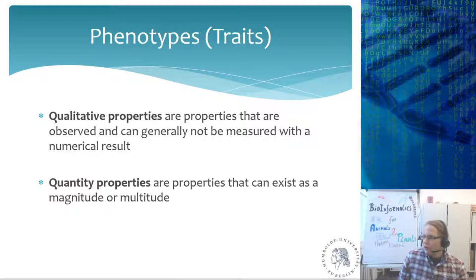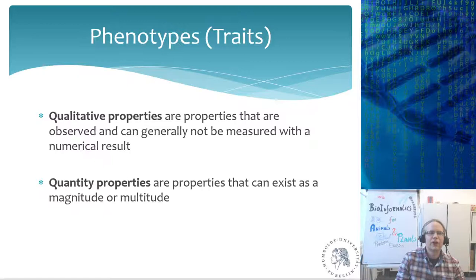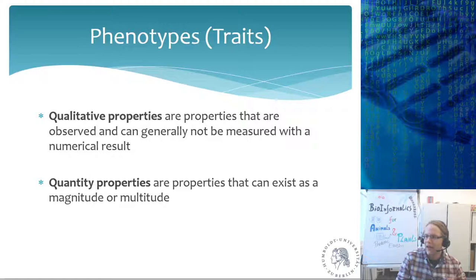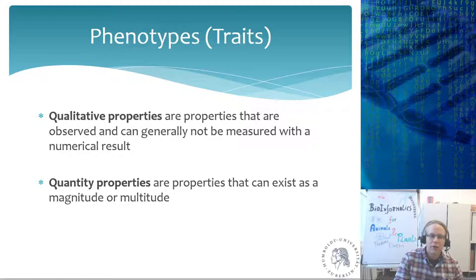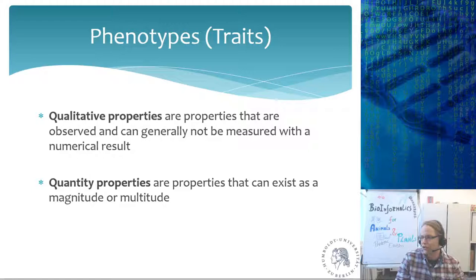Phenotypes can be qualitative — properties that are observed but not generally measured with a numerical result. For example, how a piece of meat tastes or its texture: you can say it's good or bad quality but can't easily assign a number. On the other hand, quantitative traits have a magnitude you can measure, like color defined by an RGB value, or another defined measurement of color.